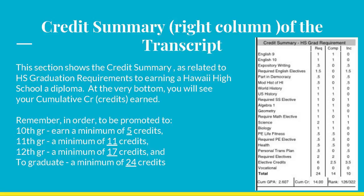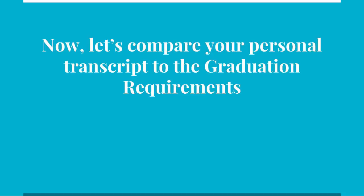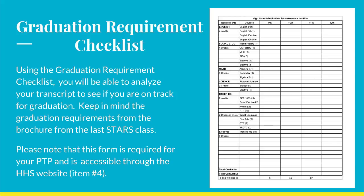Remember, in order to be promoted to the next grade level, one must earn a minimum of five credits for 10th grade, 11 credits for 11th grade, and 17 credits for 12th grade. Ultimately, a total of 24 specific credits are needed to graduate and earn a high school diploma. Using the graduation requirement checklist, you will be able to analyze your transcript to see if you are on track for graduation. Please follow the steps as I go through them. Note that this form is a requirement for your PTP, so do not throw it away or lose it. You will be able to access it soon on the Hilo High School website. If you have questions because you took a course and failed, have credits that were transferred in, or took a course that was not listed, please see your counselor.